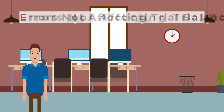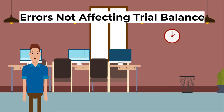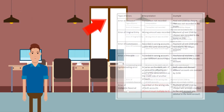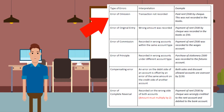Now let's look at a list of errors not affecting the trial balance. Firstly, error of omission. This is when the transaction is not recorded. An example would be: paid rent of $500 by check, and this was not recorded in the books.